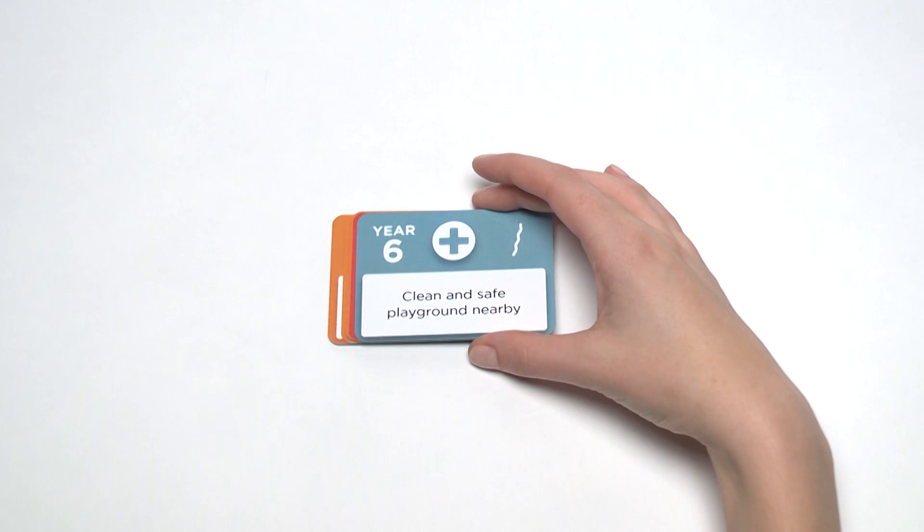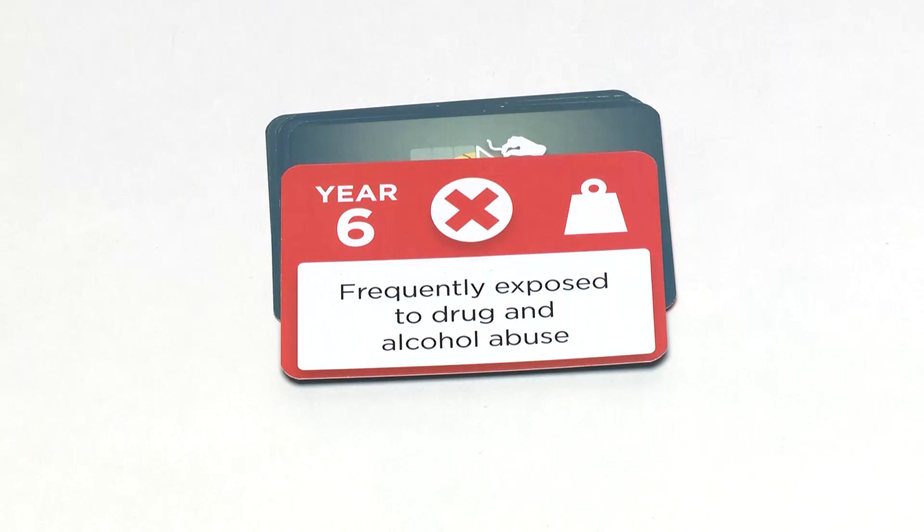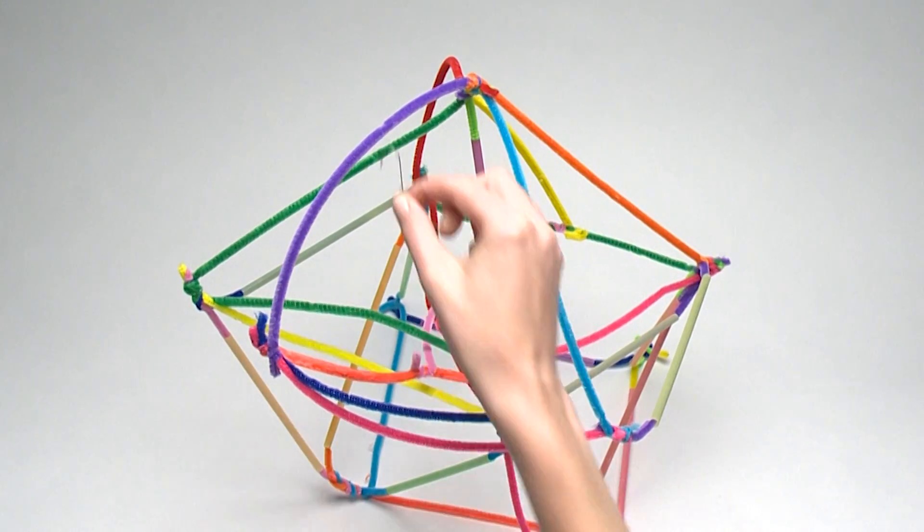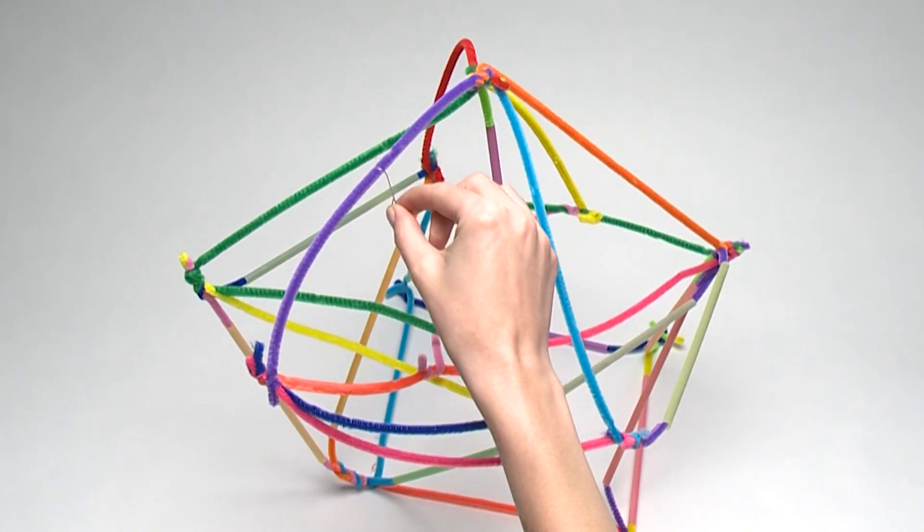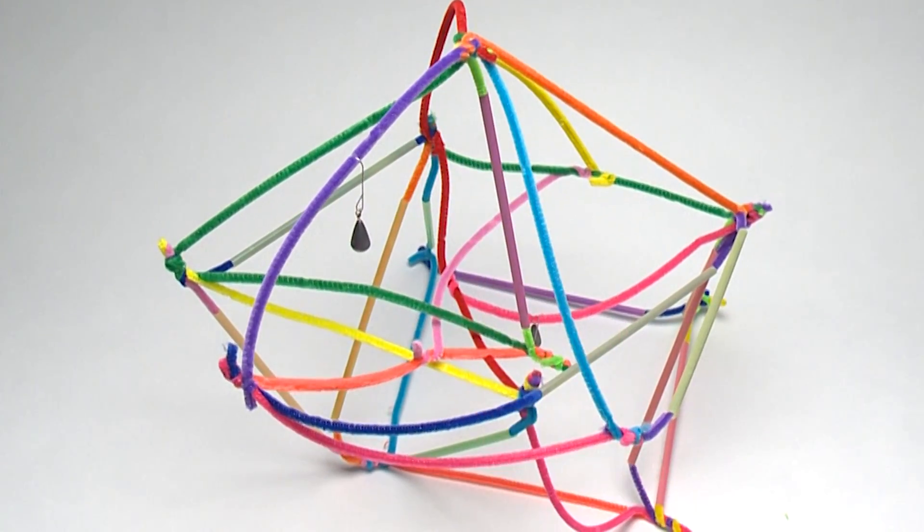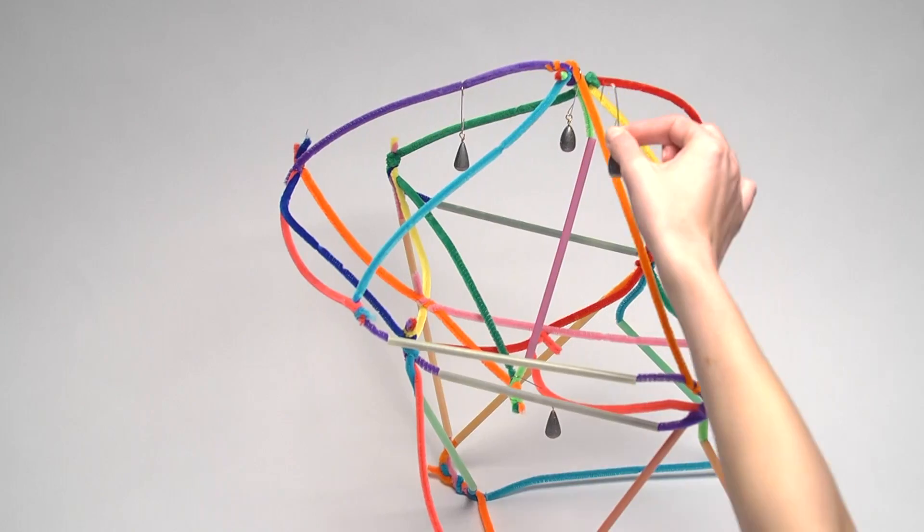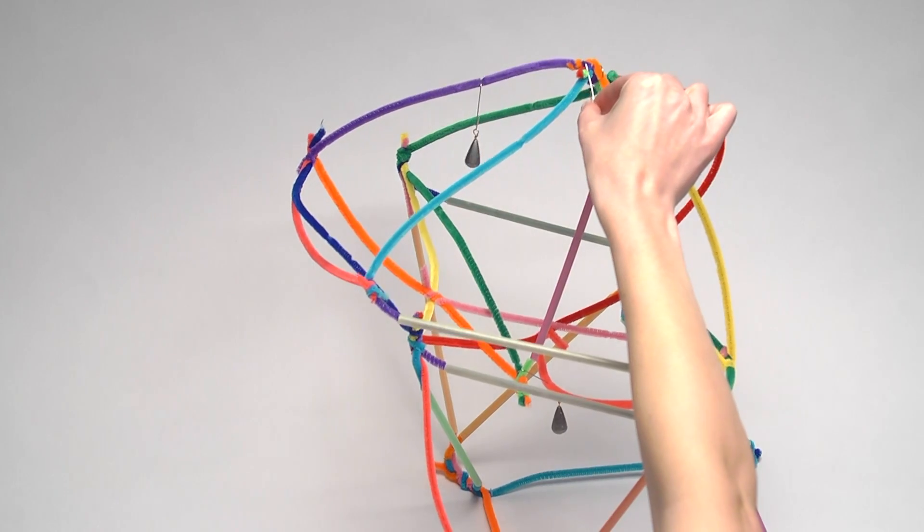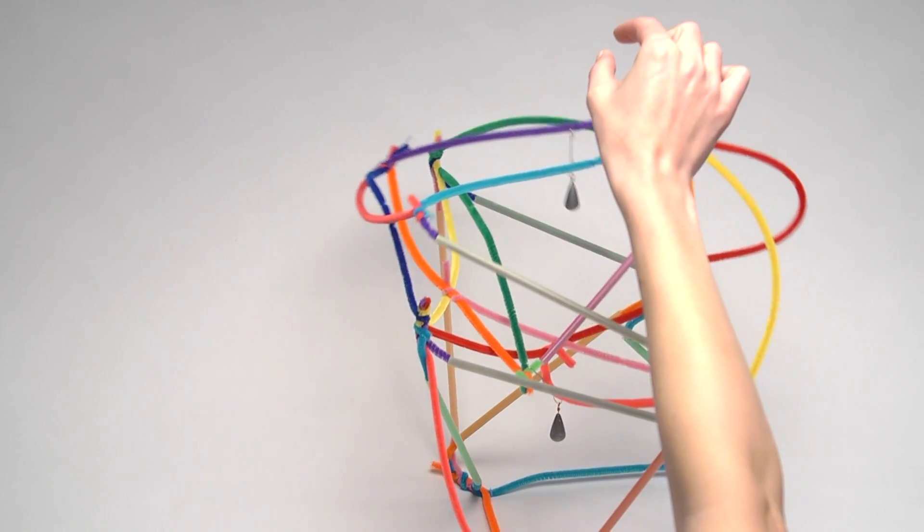So now a positive experience earns just a pipe cleaner, and a toxic stress earns a weight. Attach each weight to the tallest point on your brain. Tolerable stress turns positive or toxic like before. The game ends when your brain finishes year eight, or collapses, or tips over, whichever comes first.